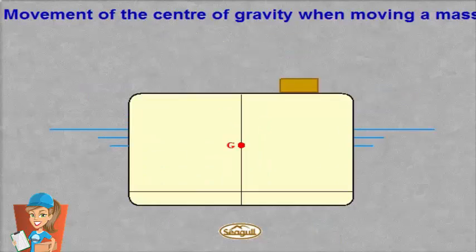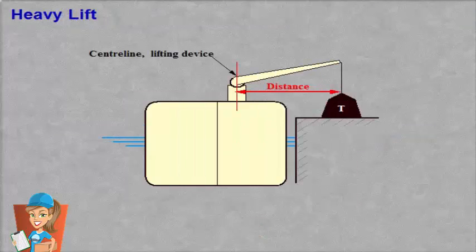When calculating heavy lift, the principles are the same as when adding a mass. The arm used to calculate the heeling moment is now the same as a transverse distance from the centre line to the end of the lifting gear.